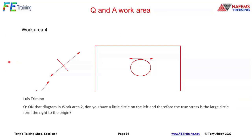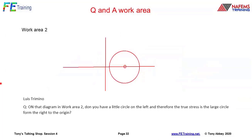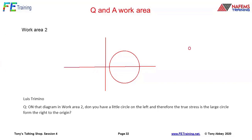Lewis asks about the diagram in work area 2 — the little circle on the left and whether the true stress is the large circle on the right. No — that little circle is actually a point, the geometric center point of the two positions. I apologize, it's not meant to be a circle; it's the center of those two positions in there.